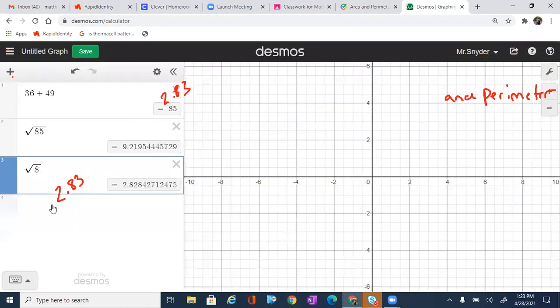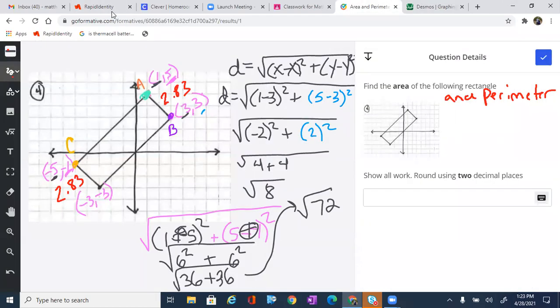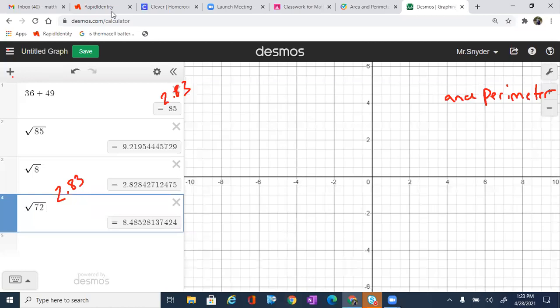Now once we've got that, we just come over here. We type in the square root of 72, which is going to bring us to 8.48 or 8 point... So let's go with 8.49. So we are going to write down 8.49.